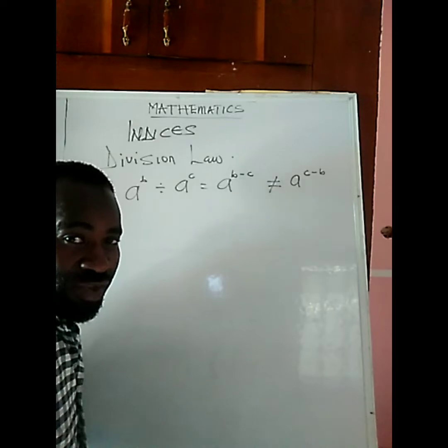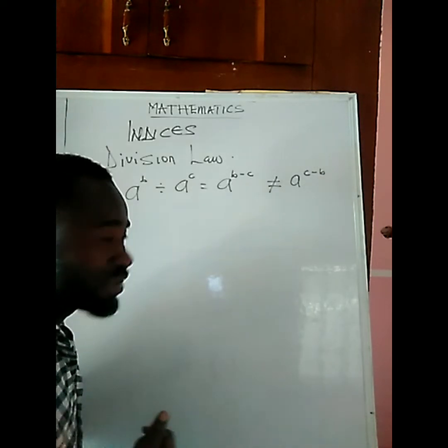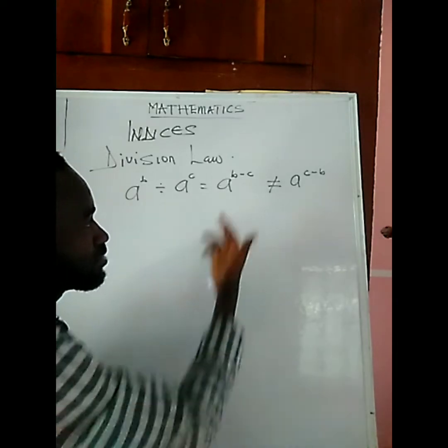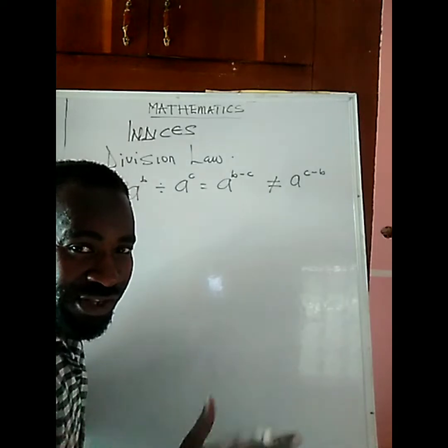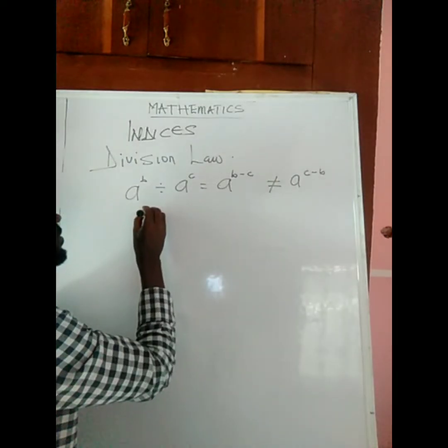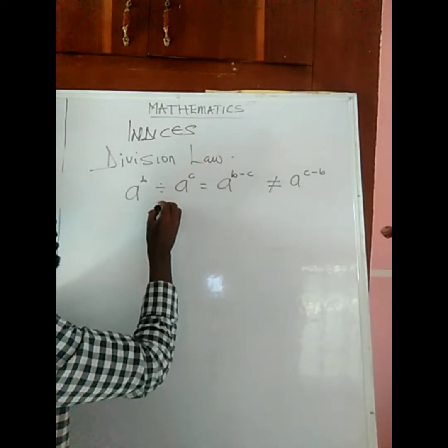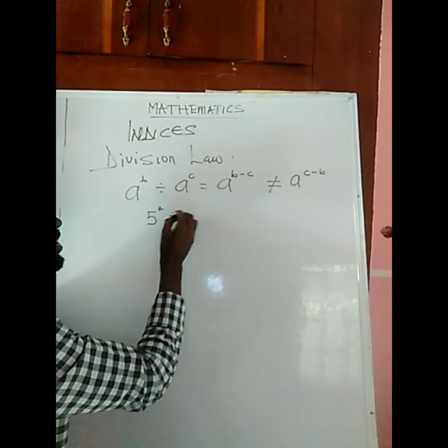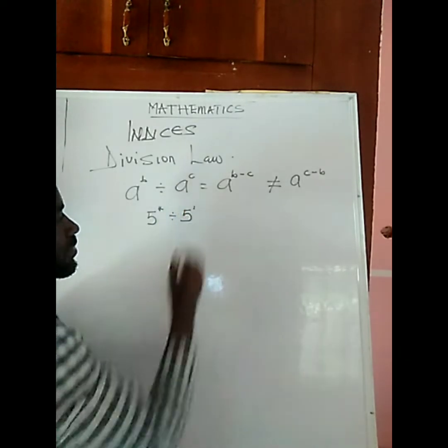One of the mistakes that students make is when they discover the first number is smaller, they tend to switch. Please don't do that. For example, if you have 5 to the power of 4 divided by 5 raised to the power of 1.